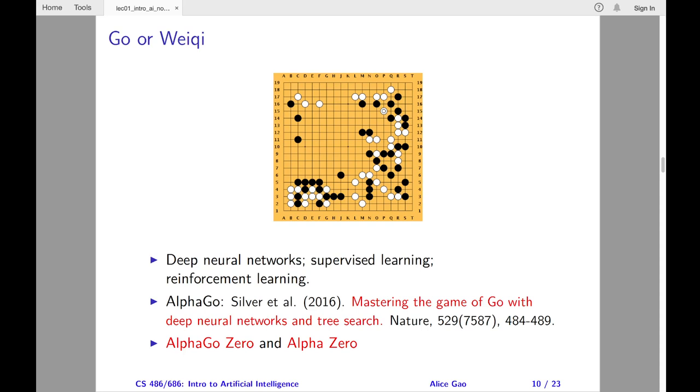AlphaZero used one general purpose algorithm to learn to play three games well: Chess, Shogi, which is Japanese chess, and Go. This was a significant step towards developing a general game-playing algorithm.